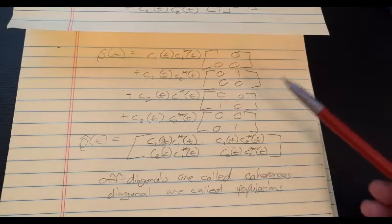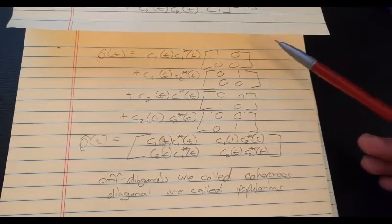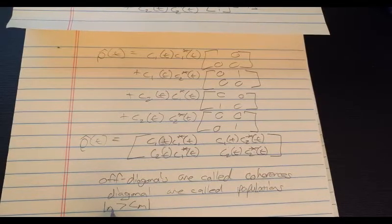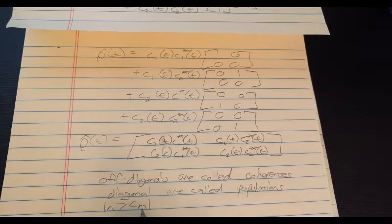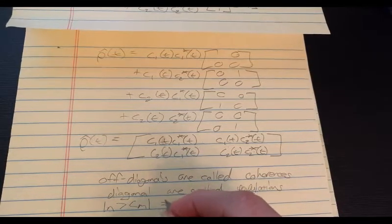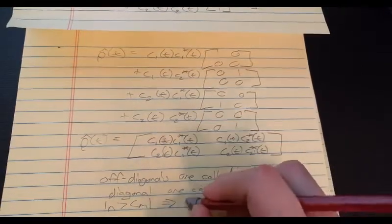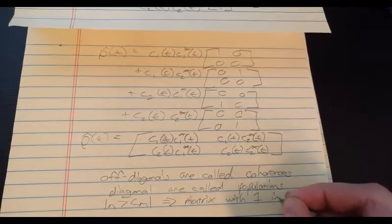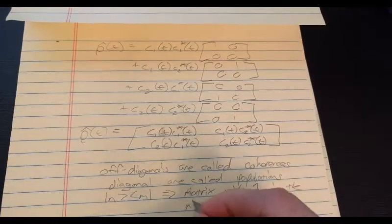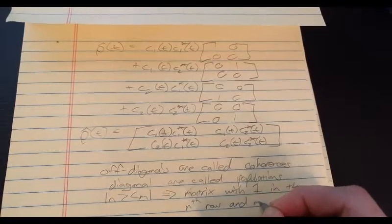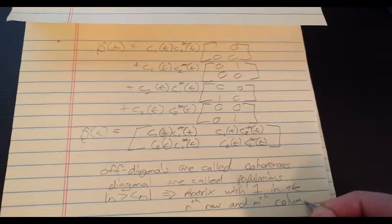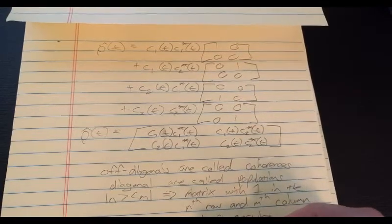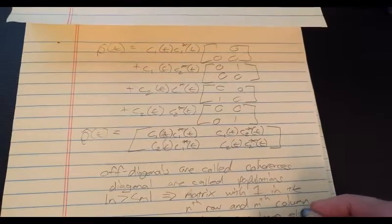So, another thing that you should notice from this analysis is that the ket of n times the bra of m, is just a matrix with a one in the nth row and mth column. And zeros everywhere else.